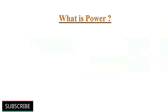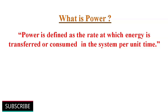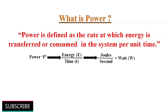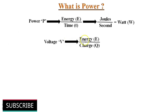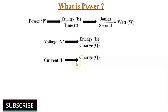Now we will discuss power. Power is defined as the rate at which energy is transferred or consumed in the system per unit time. Power is denoted by symbol P and mathematically expressed as P equals energy divided by time. Since energy is measured in joules and time in seconds, power is defined in units of joules per second, or watt. Power is measured in watts, denoted by symbol W. Voltage is mathematically written as V equals E divided by Q, and current is defined as I equals Q divided by T.